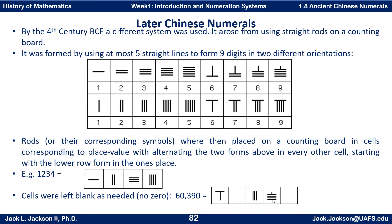This example shows: 9 tens, 3 hundreds, no thousands, and 6 ten-thousands — a true place value system. A little bit later, they would fill these blanks in with a placeholder, which is a zero. They actually used a little circle for it, basically like we use for zero today. Then you could remove the grid background and write the numerals that way.